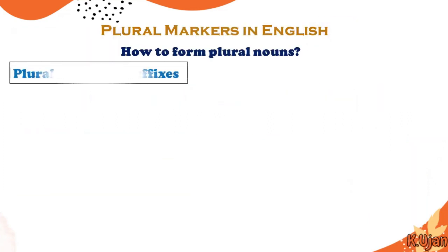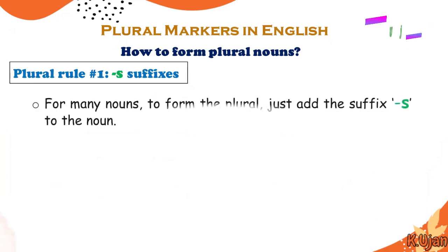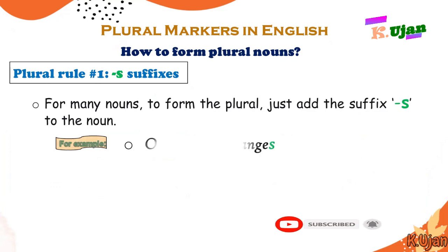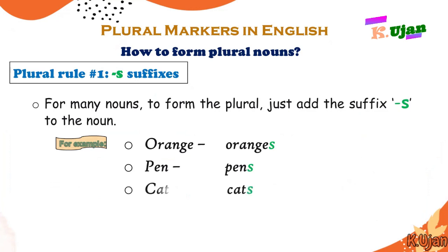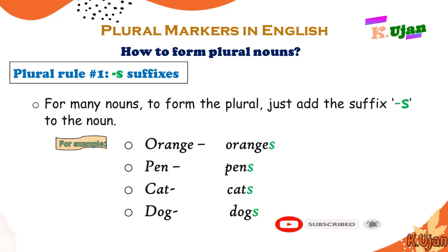Here is how to form plural forms. Plural rule number 1: the S suffix. For many nouns, to form the plural just add the suffix -S to the noun. For example: orange/oranges, pen/pens, cat/cats, dog/dogs. This is how we make plurals out of singulars by adding S. This is rule number 1.